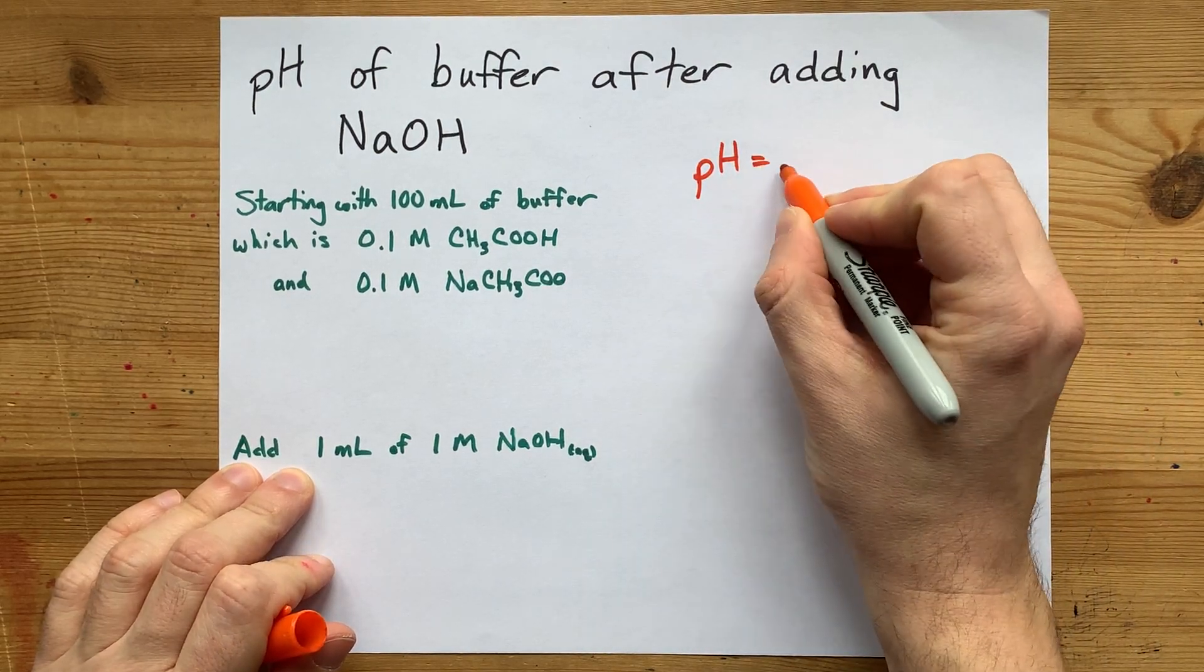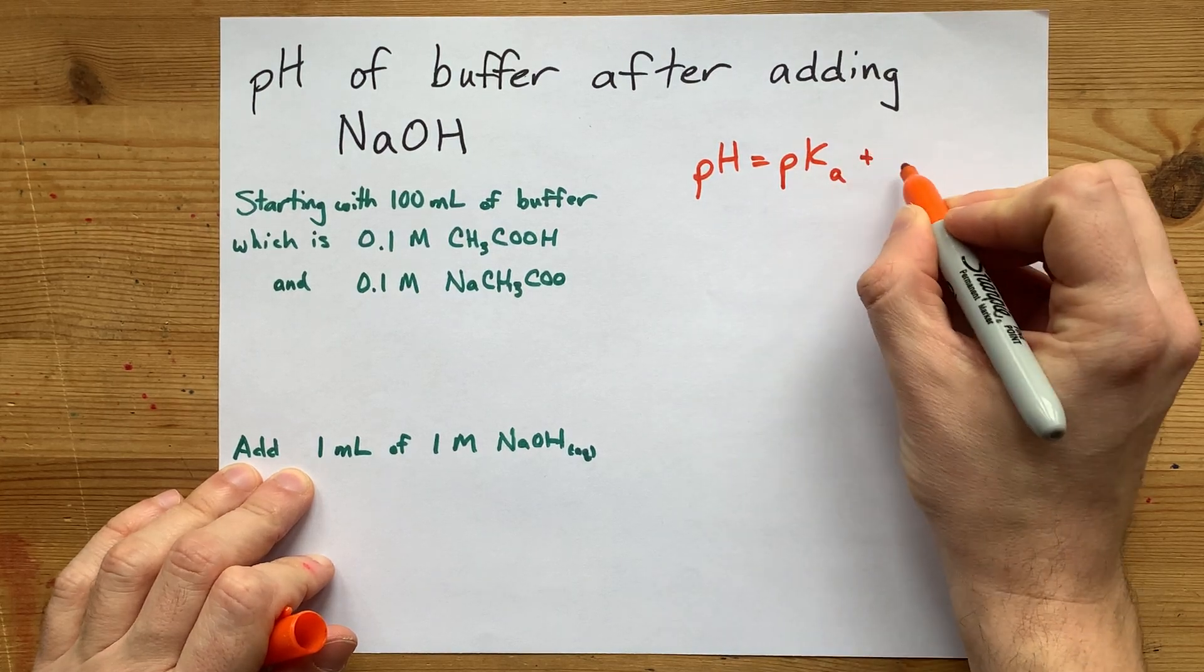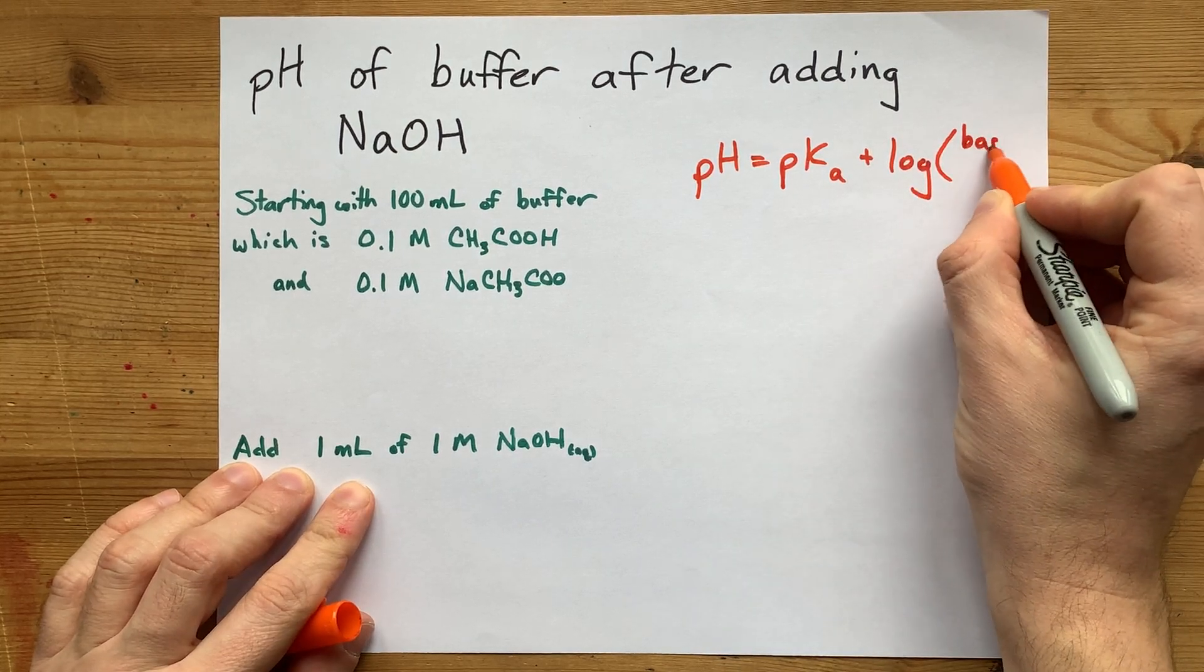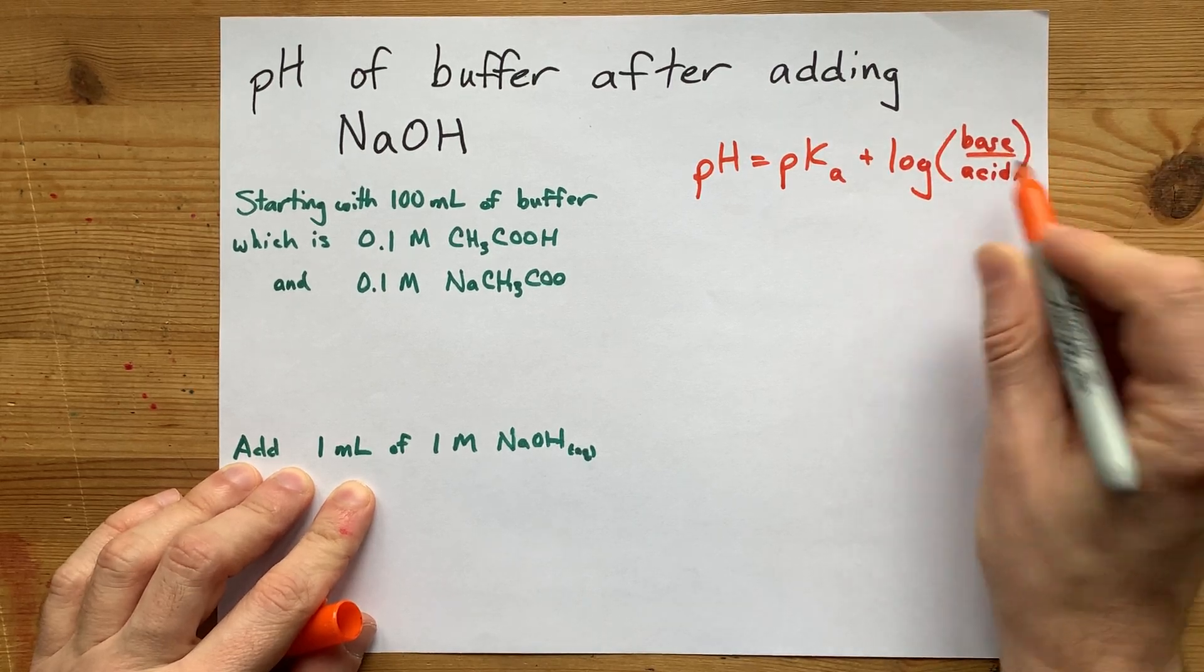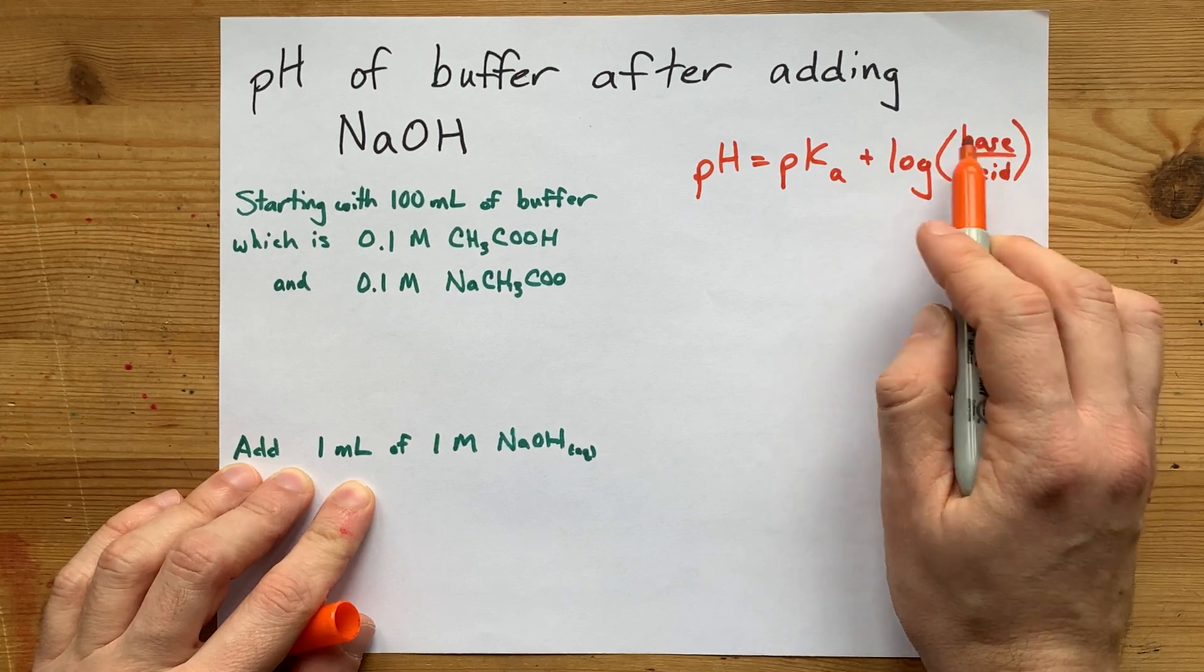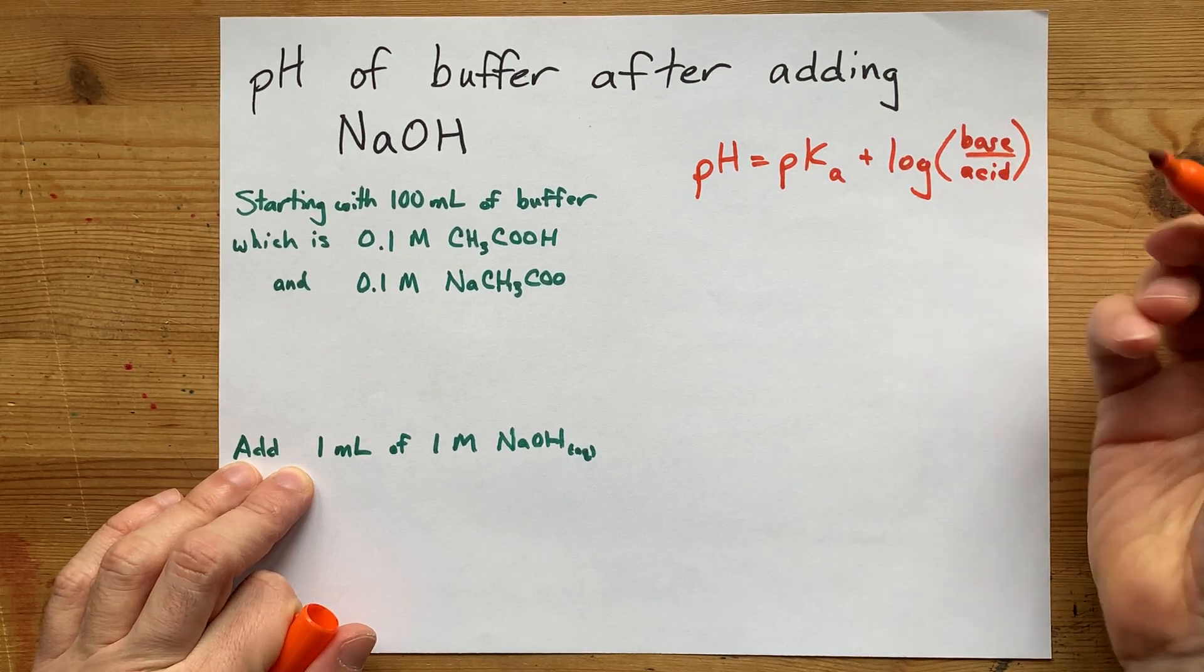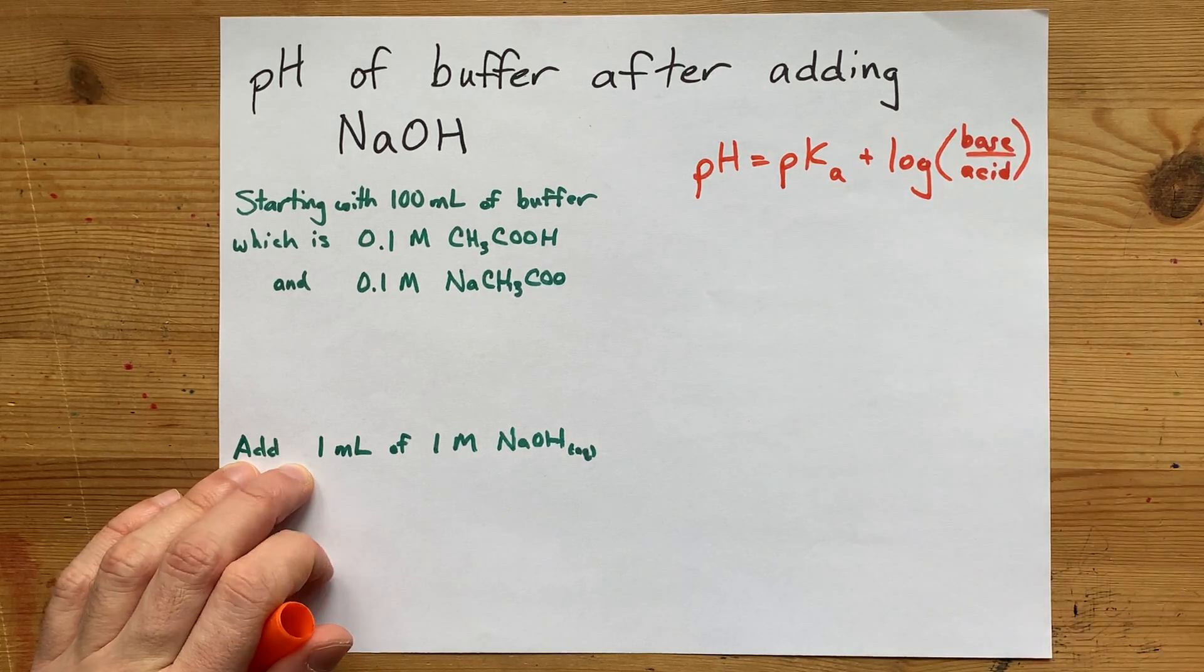When you're dealing with the pHs of buffers, we usually use the Henderson-Hasselbalch equation. The pH equals the pKa plus the log of base over acid. Some teachers want you to use the concentration terms in square brackets for conjugate base and acid. But I just write base over acid because I'm also allowed to use the number of moles here, not just the concentrations.